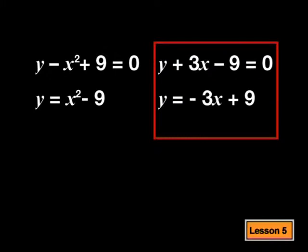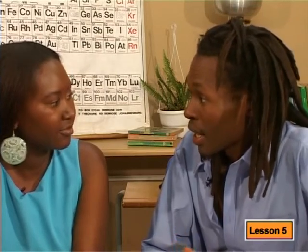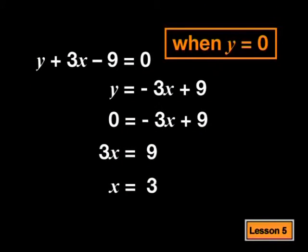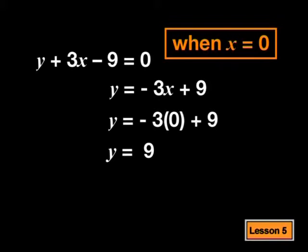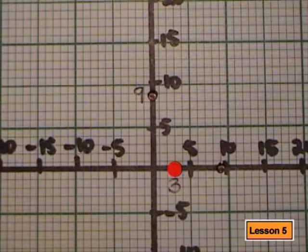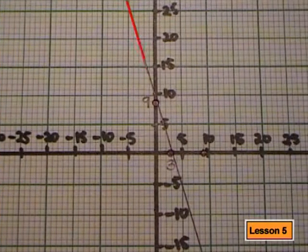Do you have to do that for both graphs? Not really. This equation here is the equation of a linear function. To draw it accurately, I only have to find the x and the y intercepts and then join them with a ruler. Why don't you go ahead and do that? To find the x intercept, we need to make y equal to 0 and solve for x, so the x intercept is 3. To find the y intercept, we need to make x equal to 0 and solve for y, which makes the y intercept 9. Now I plot the intercepts on the axes — x equals 3 is here and y equals 9 is here. Now all I need to do is join them with my ruler.